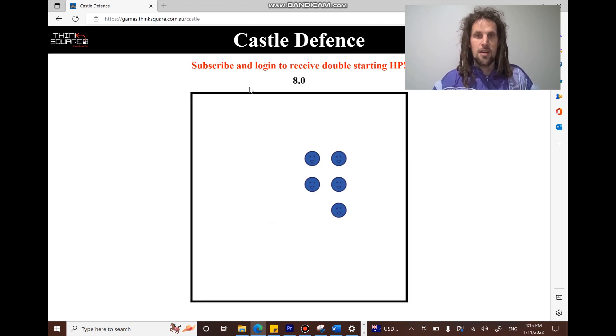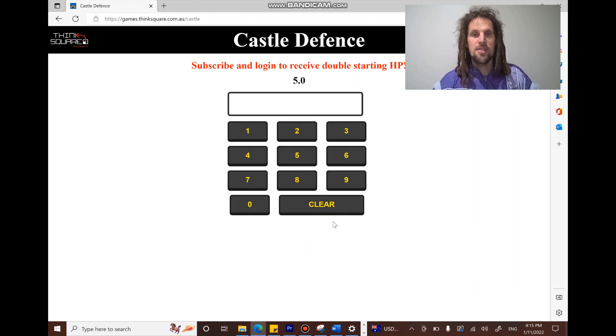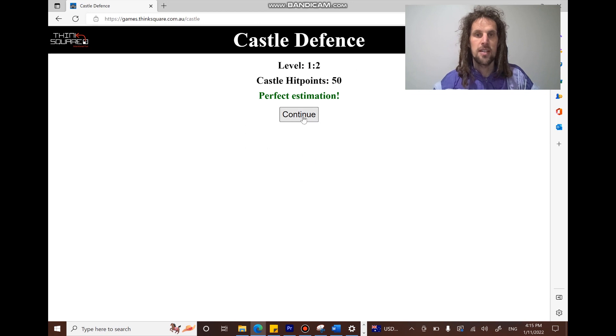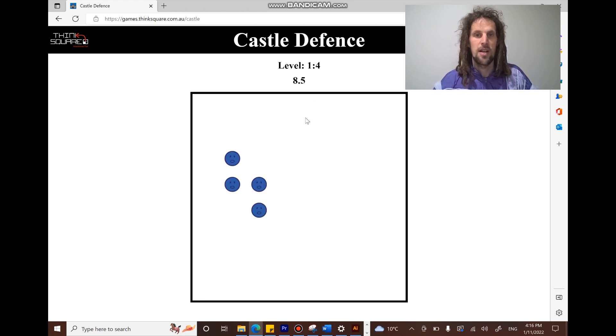So the countdown will begin, you'll get a certain amount of time to look at the items. And here I saw five. So I'm going to click five on the on-screen keypad. You can also use your keyboard if you like. And you can click that at any time to lock in your answer. So again, I saw five straight away. So I can click it in.